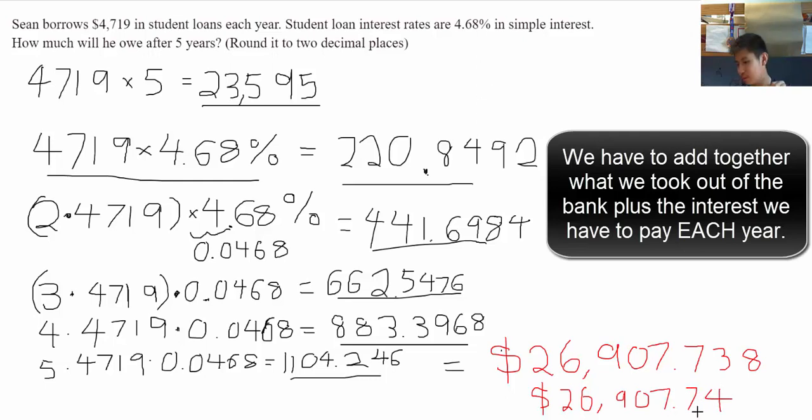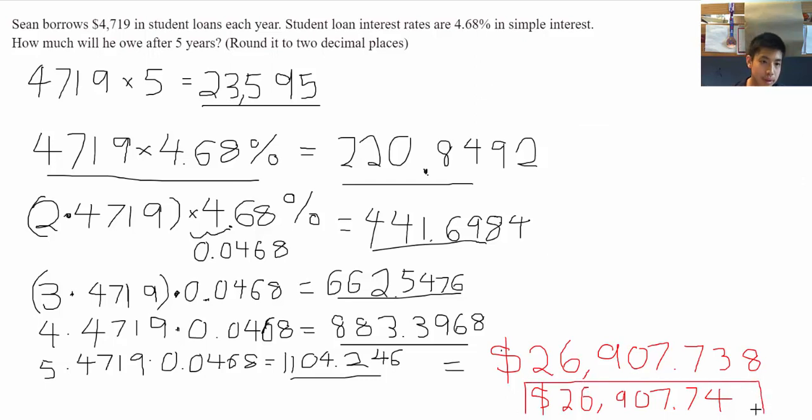Since the question asks for two decimal places, our answer would be $26,907.74. Now, we would not have three decimal places for money anyway, so it would be obvious to round to two decimal places. So, we have here our grand total for how much we have to pay back the bank after five years, if we borrow $4,719 each year.